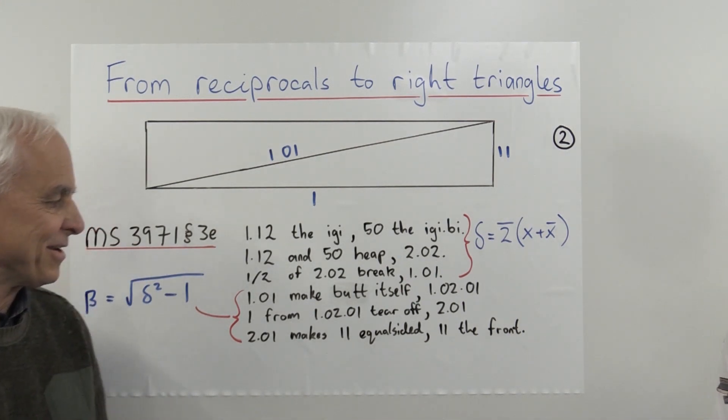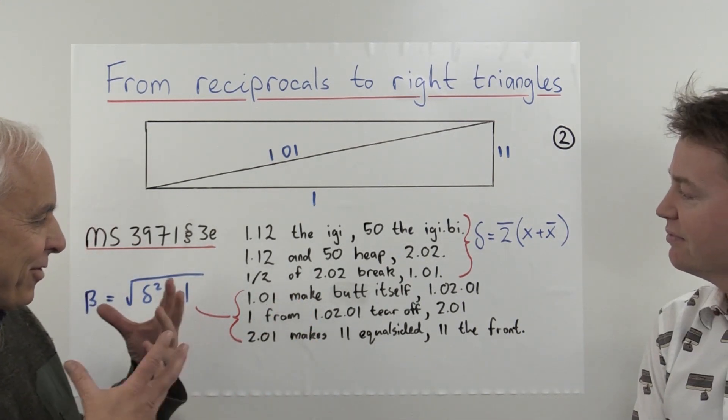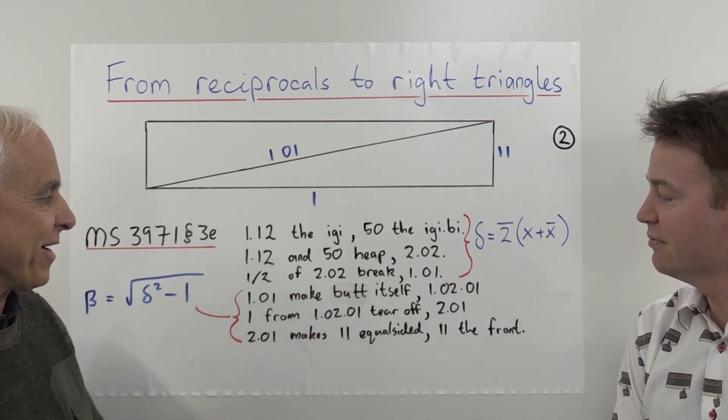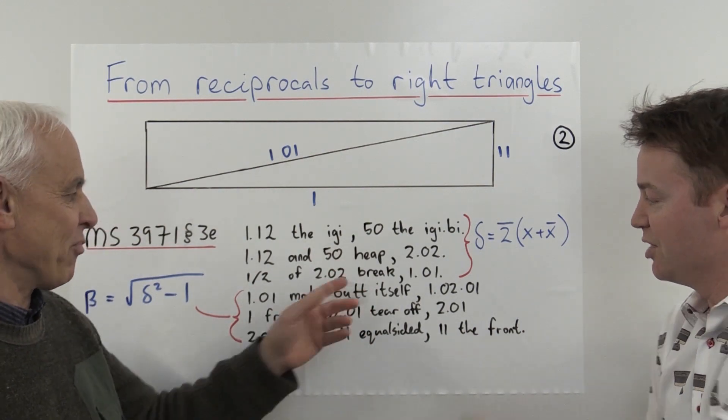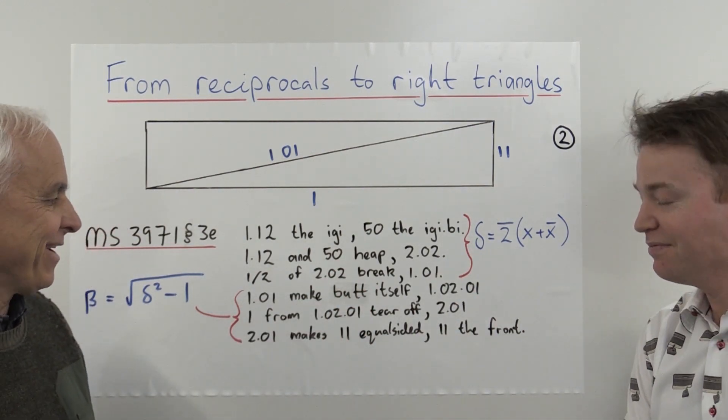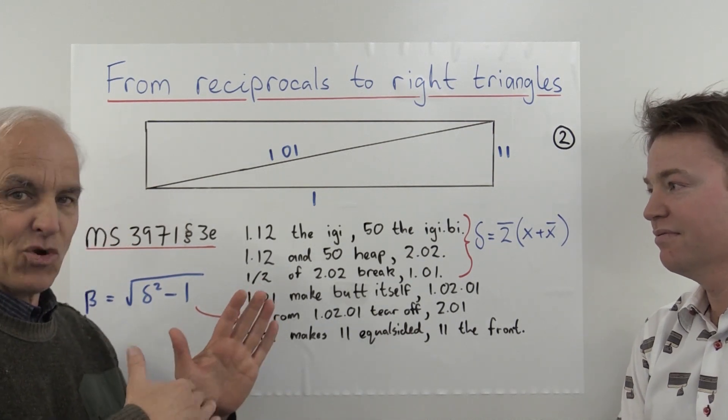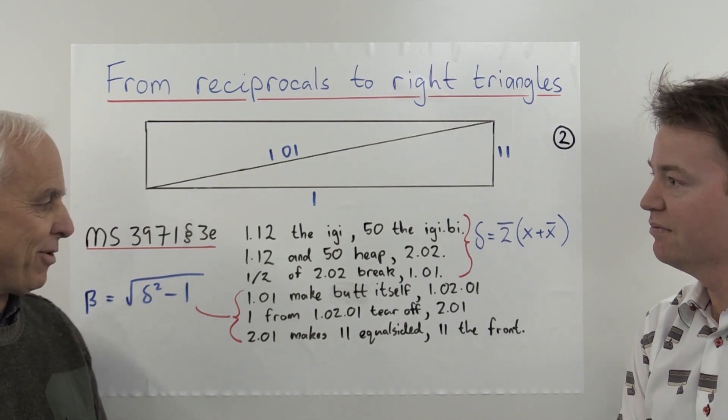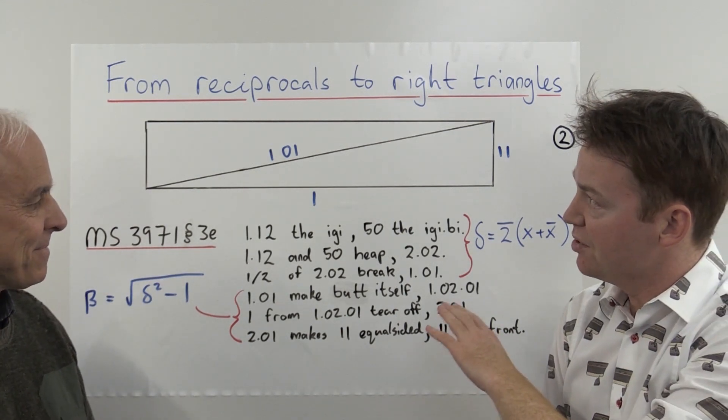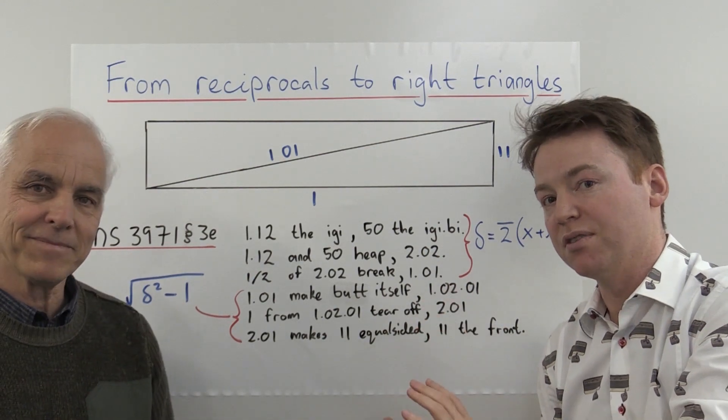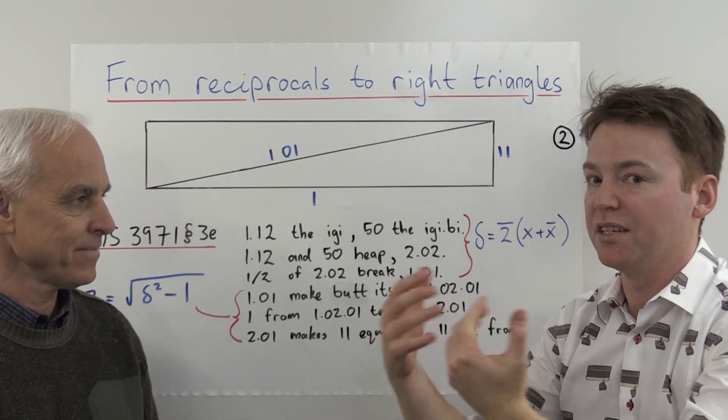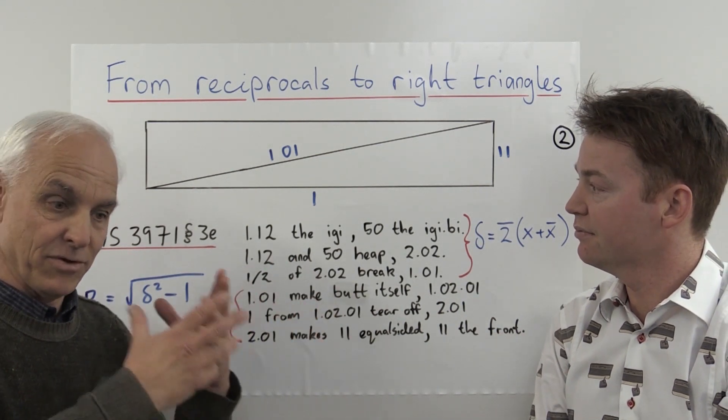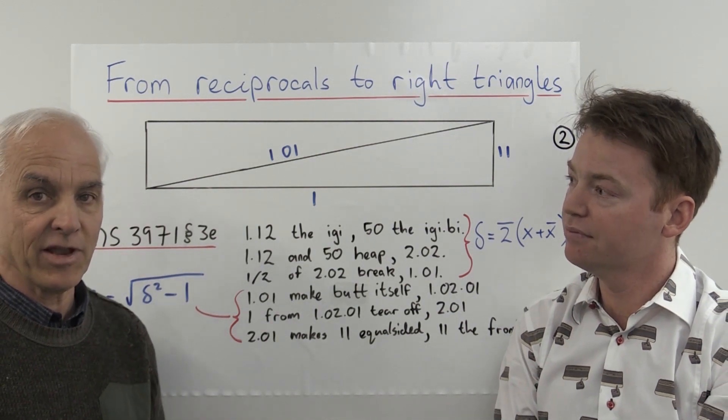I really love the way they use the language here. It's somehow very physical. You know, make but itself to describe the squaring, talking about heap for addition and tearing off, and equal-sided to represent a square—basically you're taking a square root there. So it's great stuff, this Babylonian way of writing. But in particular, this demonstrates why reciprocals are so important to this story—that it's reciprocal pairs of numbers that give them these geometric objects. And this certainly illustrates very clearly their understanding of those relations that we had on that previous slide.